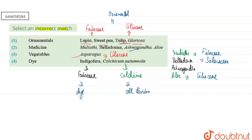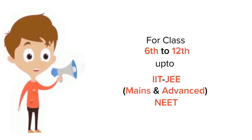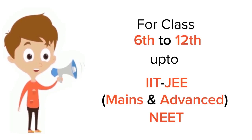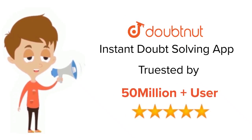Therefore, the incorrect option is the fourth one — dye: Indigofera and Colchicum autumnale. I hope this answered your question.